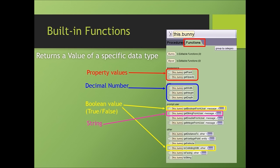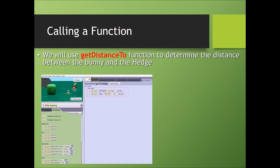The last data type is string. Get string from the user. Many times you want to ask the user what's your name, and the user will type their name. So overall, when we talk about functions, a function will return a specific data type. The four types of data are property values, decimal number, boolean value, and string value. Calling a function.